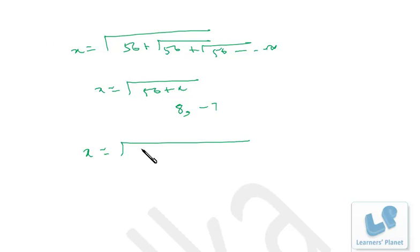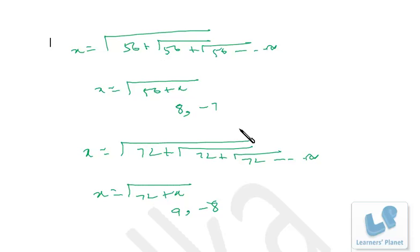Or suppose you have 72 plus 72 plus 72, right? So x is equal to 72 plus x, either you take 9, so it will be 81, so further it will be 9, or you take x as minus 8, so 72 minus 8, 64, further it will be minus 8, right? So this sort of problems can be done instantly. I hope you are clear now.